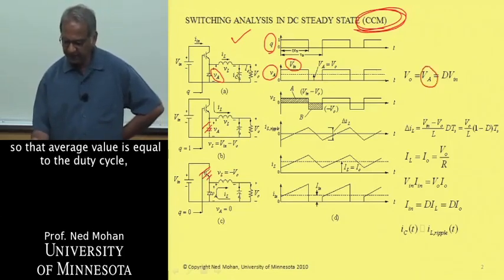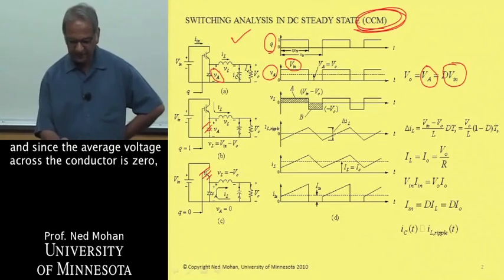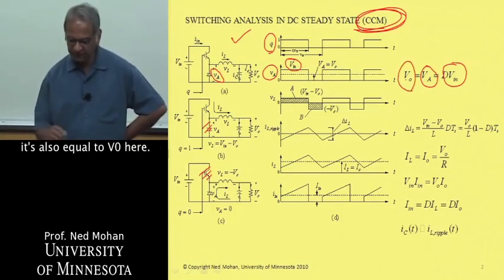So that average value is equal to the duty cycle, duty ratio times the input voltage, and since the average voltage across the inductor is zero, it's also equal to V0 here.